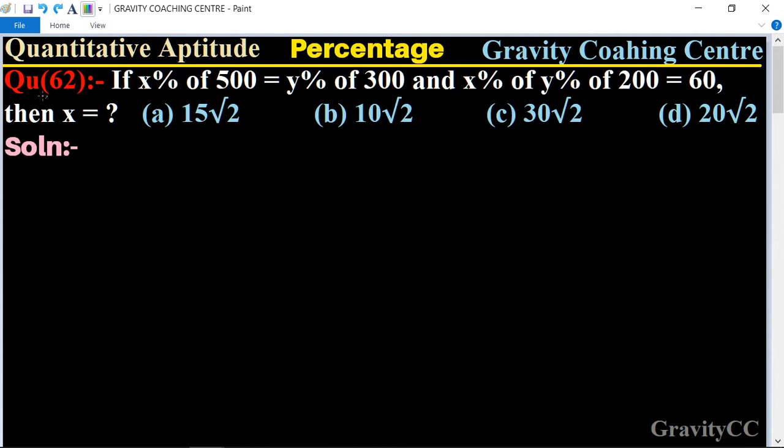Quantitative Aptitude, Chapter Percentage, Question Number 62. If x% of 500 equals y% of 300, and x% of y% of 200 equals 60, then x equals what?